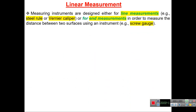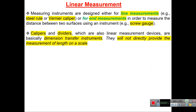Measuring instruments are designed either for line or linear measurements — for example, a steel rule or vernier caliper — or for end measurements, to measure the distance between two surfaces. Calipers and dividers are linear measurement devices that are basically dimension transfer instruments: they specify the distance between two surfaces or points, then the dimension is taken using a steel rule or other suitable measuring device.